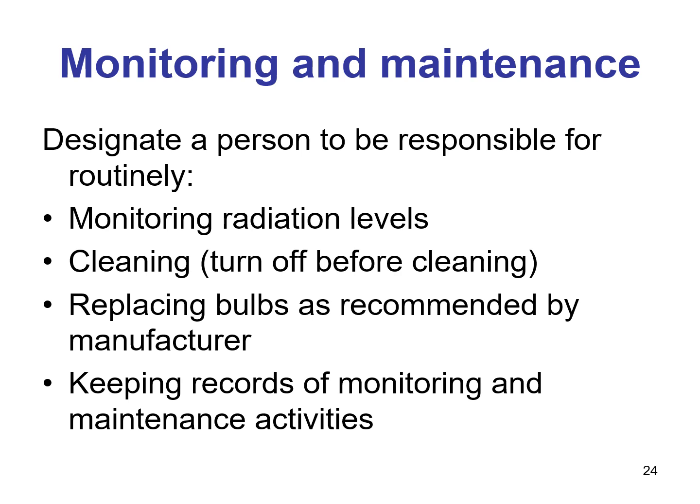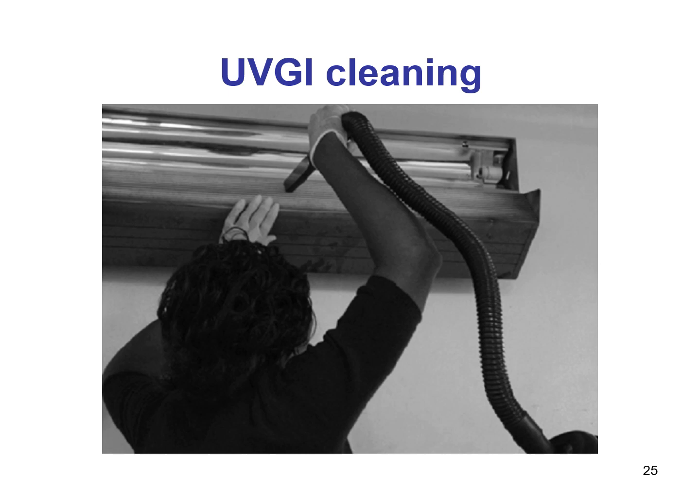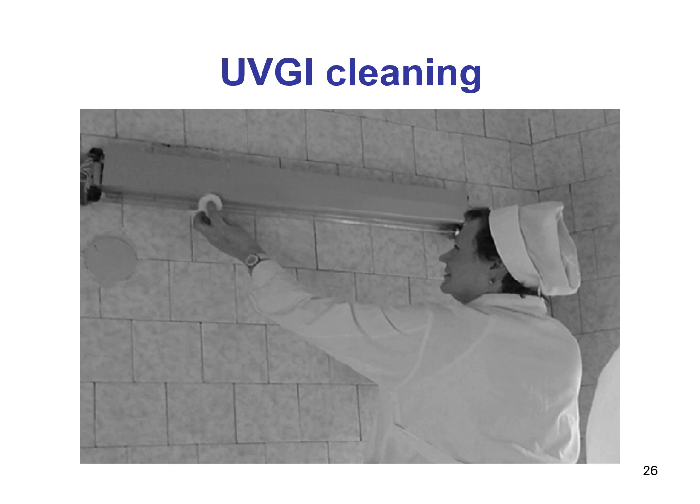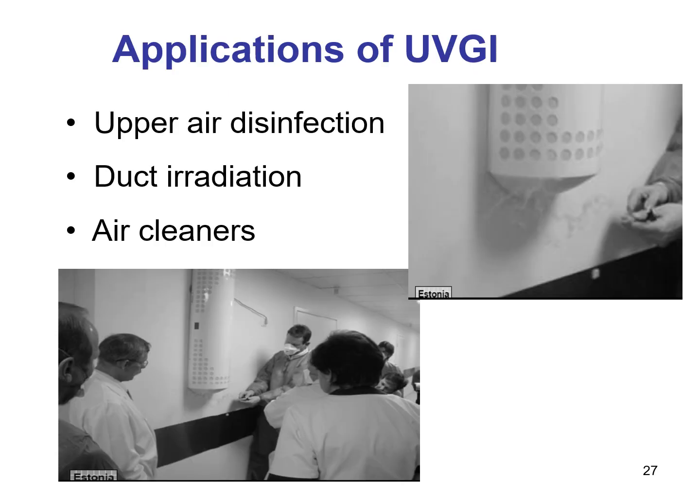Monitoring and maintenance are essential. Designate a person to be responsible for routinely monitoring irradiation levels, cleaning and replacing bulbs as recommended by the manufacturer, and keeping records of monitoring and maintenance activities. Cleaning is very important to ensure the device works as planned, as blue light attracts bugs and dust. UV bulbs can be cleaned with a cloth dampened with a commercial alcohol-based cleaner. UVGI can also be used in ventilation ducts, and UV air cleaners are being tested in multi-drug resistant tuberculosis reference centers.